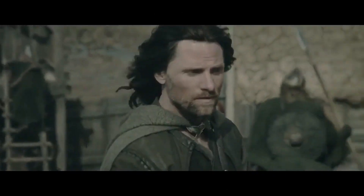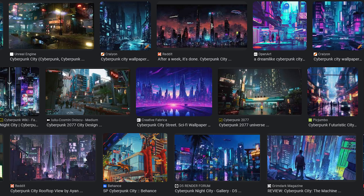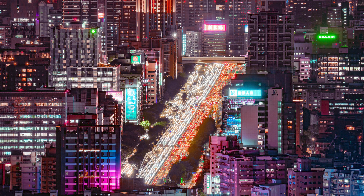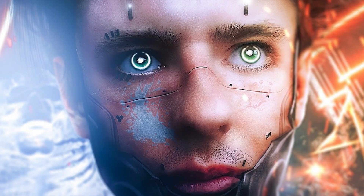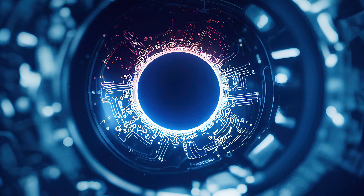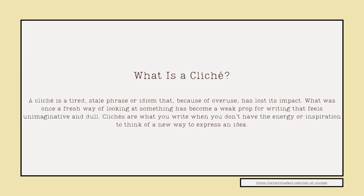One of the ways we can do this in our writing is with setting. For instance, if we are creating a cyberpunk scene, we need to be able to visualize what the reader will be reading before we put it on the paper. To help do this, we can pull up Google and search the term 'cyberpunk.' You can also use terms linked with cyberpunk such as body modification, cyberware, and AI. These are things our main character can experience before the inciting incident. Now, something we need to keep in mind is to avoid cliché terms like 'dark and stormy night.' It is always best policy to find new ways of saying the same thing. A cliché is a tired, stale phrase or idiom that, because of overuse, has lost its impact. What once felt like a fresh way of looking at something has become a weak prop for writing that feels unimaginative and dull.